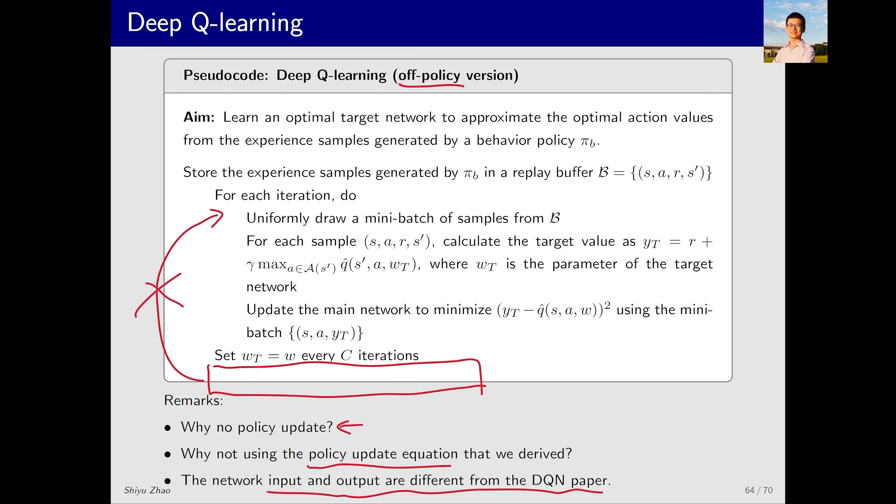This is the key reason why we must study the fundamental principles of algorithms. With a deep understanding of the algorithm, you can modify, extend, and innovate. In essence, we're presenting a simplified version of the DQN algorithm's pseudocode that highlights its principles. Let's take a look at the neural network used in the original DQN paper and compare it with the one we've discussed here.